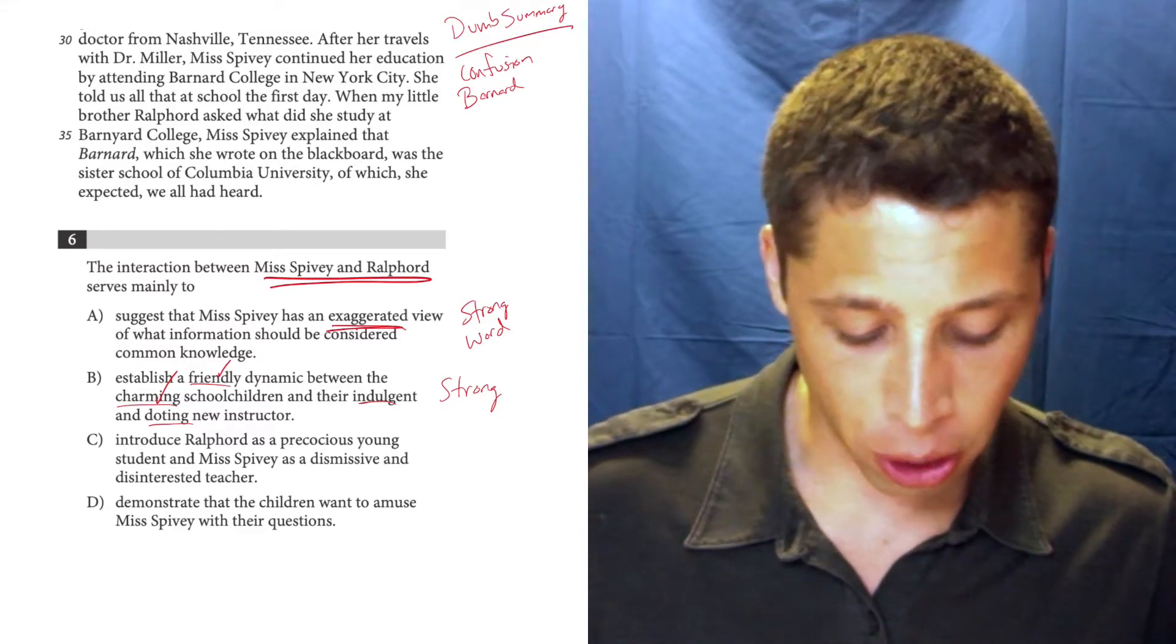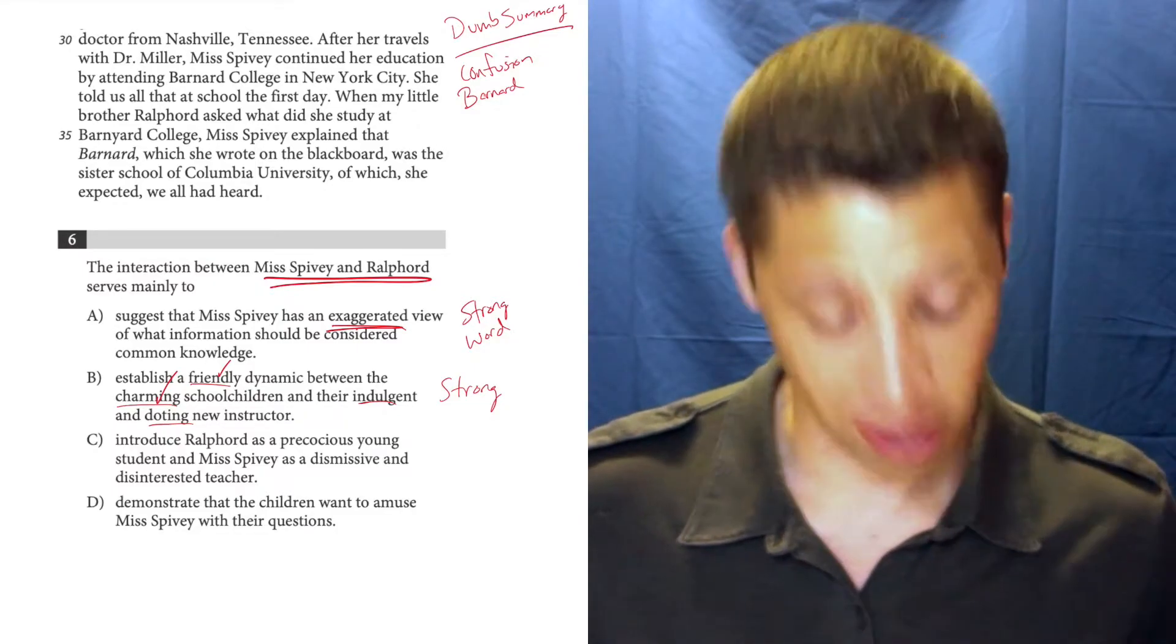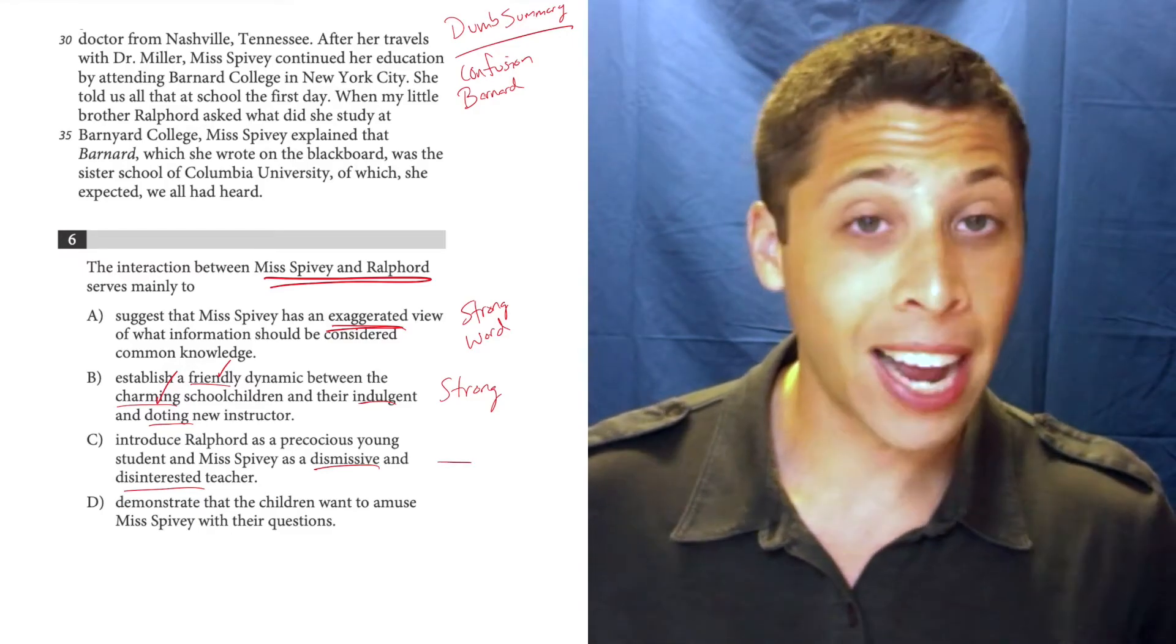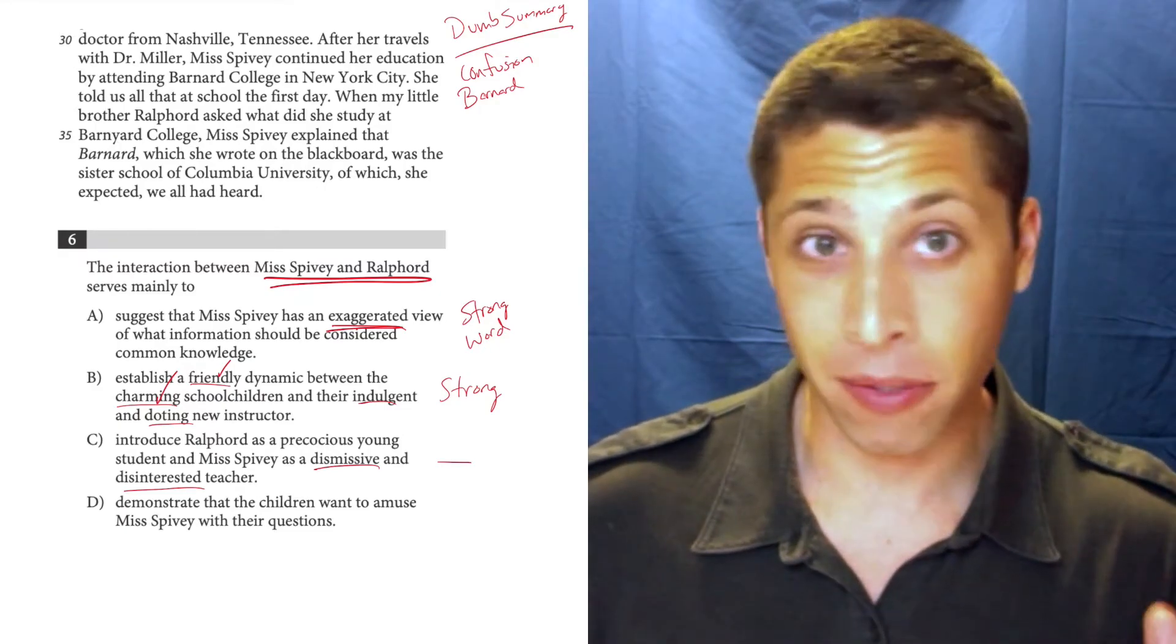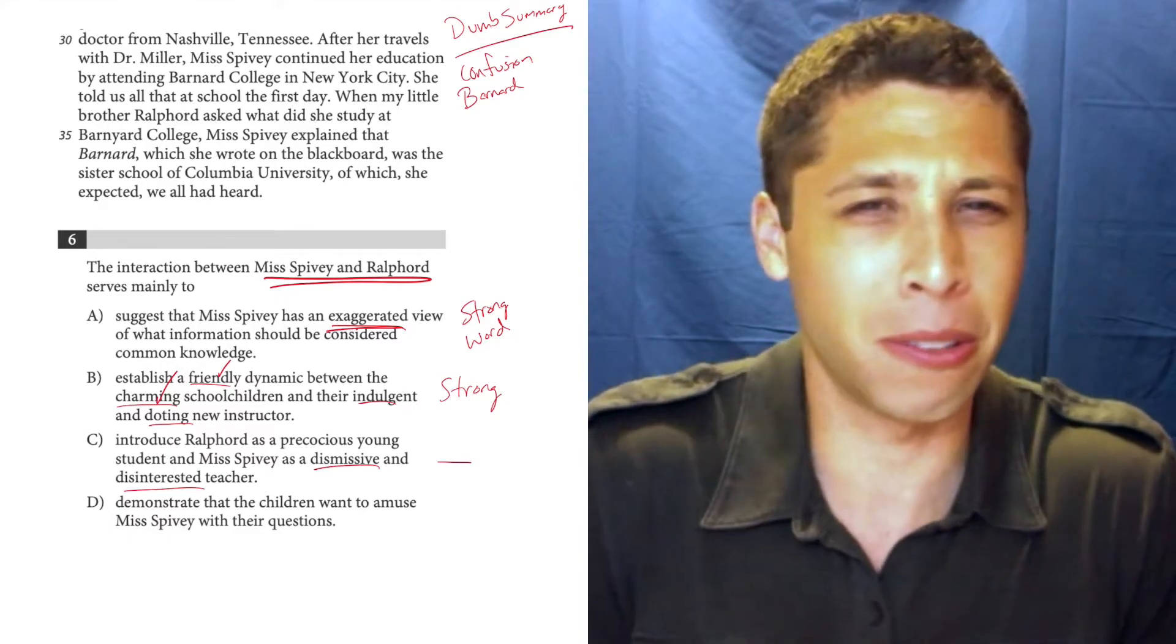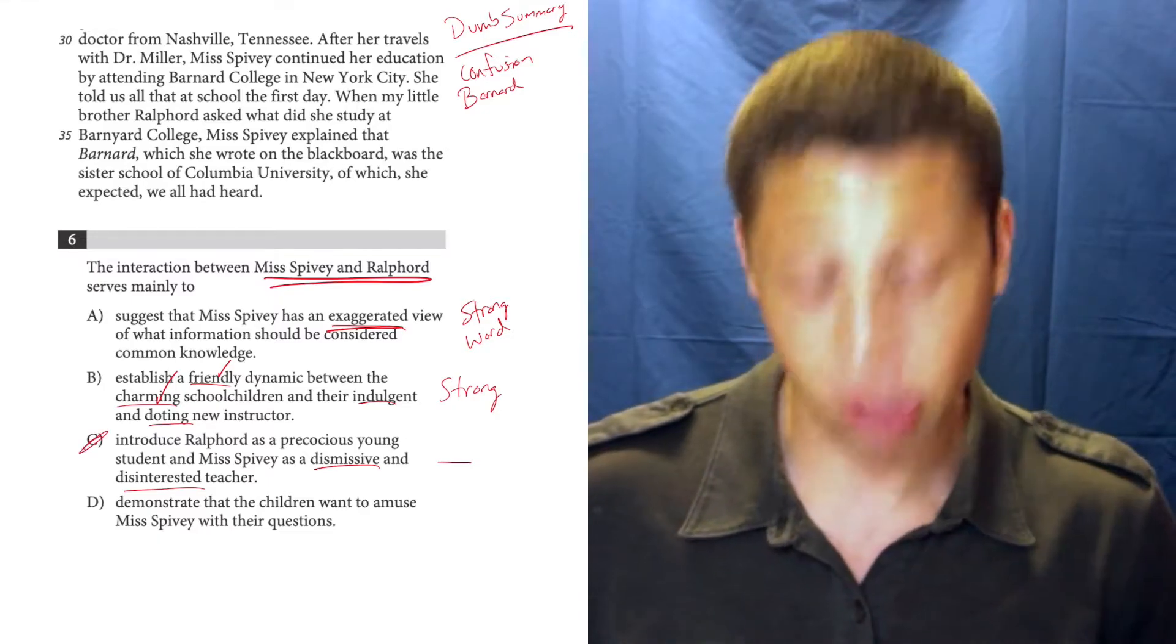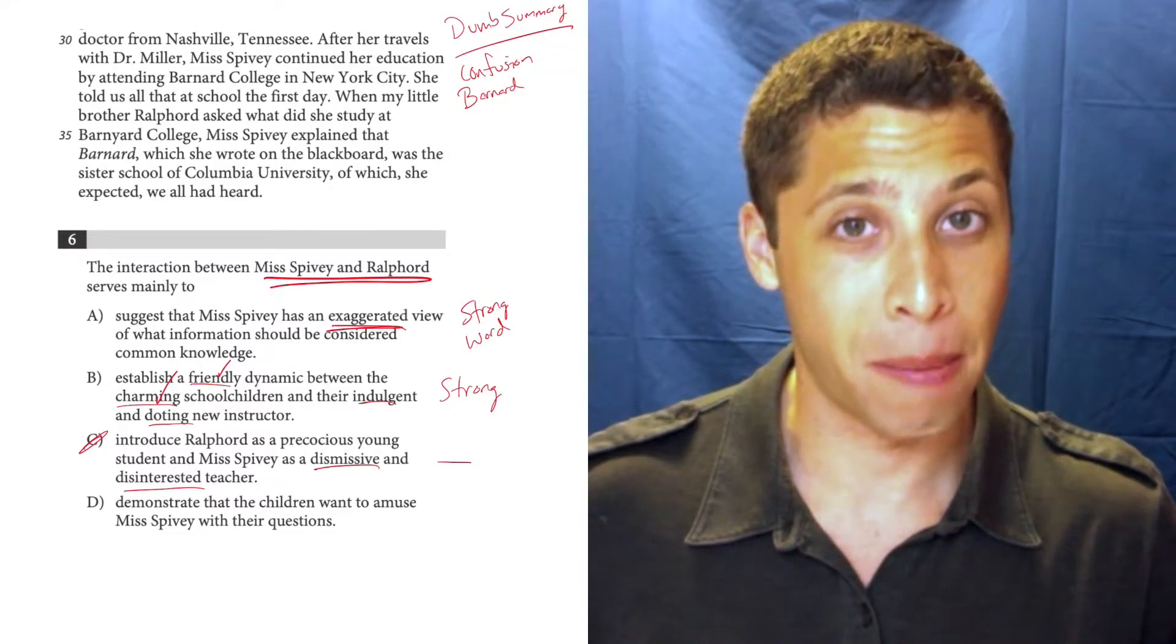So C. Introduce Ralford as a precocious young student and Miss Spivey as a dismissive and disinterested teacher. So that's really strong too. Dismissive and disinterested. Those are really negative words and I did not get a super negative vibe here. I got like more of a mixed vibe. Like, it's like a cute story but also the kid didn't know something, so it's kind of mixed, but it's certainly not this negative. I don't like this choice. It's strong and provably wrong in my mind.